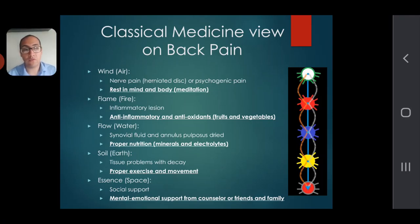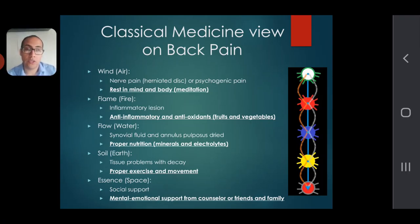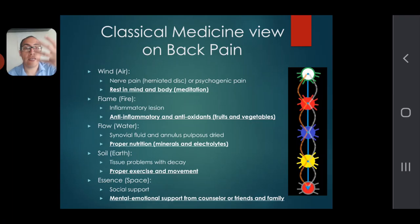Simple fruits and vegetables are great anti-inflammatory options. When it comes to the water element, this relates to synovial fluid — the ability for joints to move. If that gets compromised, proper nutrition and electrolytes like minerals and vitamins are things to consider, because they can help hydrate the body, especially the back.